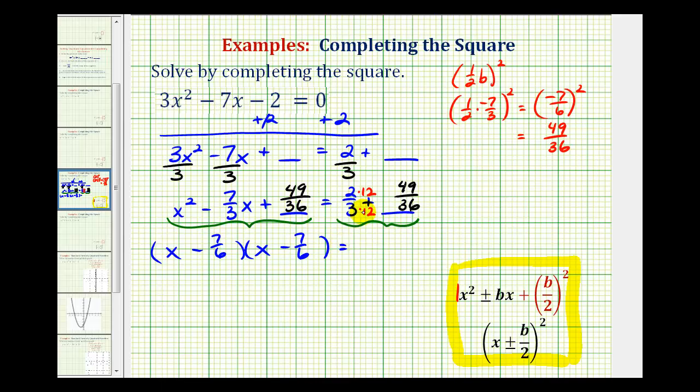So on the right side, we're going to have 24/36 + 49/36. We can write this as (x - 7/6)² equals 73/36.